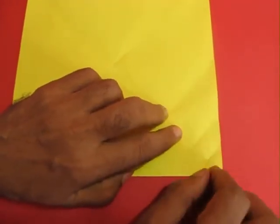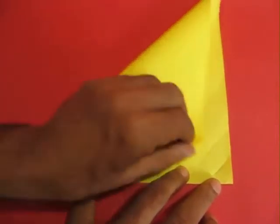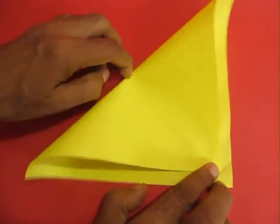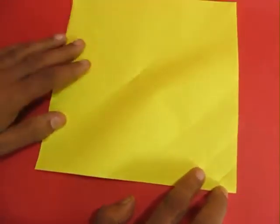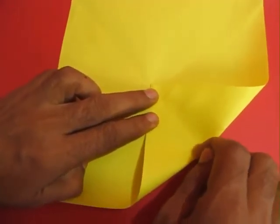Now bring the left hand corner to the one sixteenth point and once again make a mark. Now bring the right hand corner and fold this to this mark and this is the crucial mark.